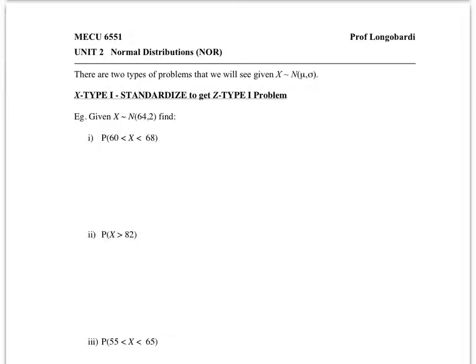First we want to find what's the chance, probability, proportion, percentage of observations that lie between 60 and 68, where this variable is normally distributed with a mean of 64 and a standard deviation of 2.